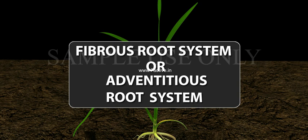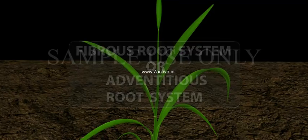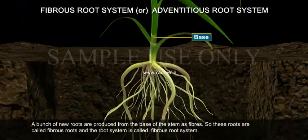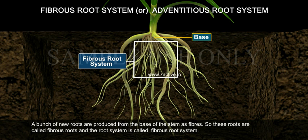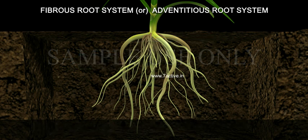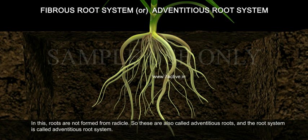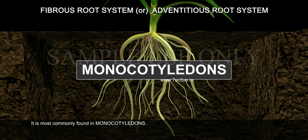Fibrous root system or adventitious root system. A bunch of new roots are produced from the base of the stem as fibers. So these roots are called fibrous roots and the root system is called fibrous root system. In this, roots are not formed from the radicle. So these are also called adventitious roots and the root system is called adventitious root system. It is most commonly found in monocotyledons.